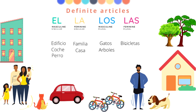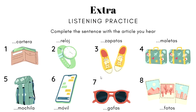Now we have an example for feminine plural. For that we're going to use the definite article las. Las bicicletas. Muy bien. Excelente.